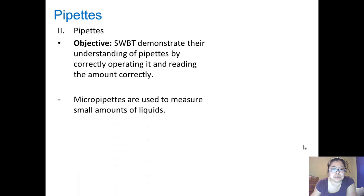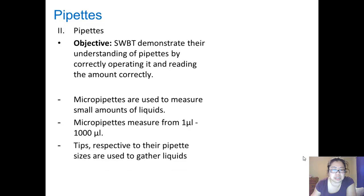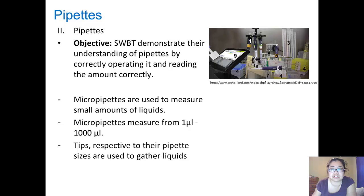Micropipettes are used to measure small amounts of liquids. Micropipettes measure from one microliter up to a thousand microliters, and their tips, respective to the pipette sizes, are used to gather the liquids.